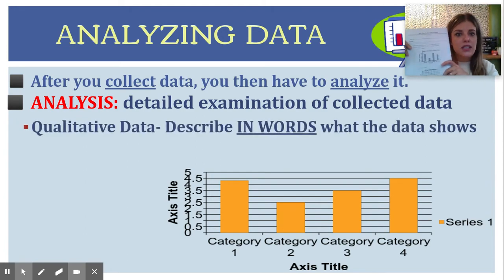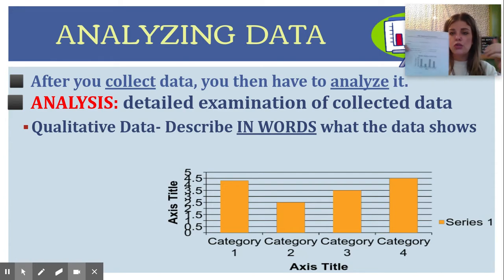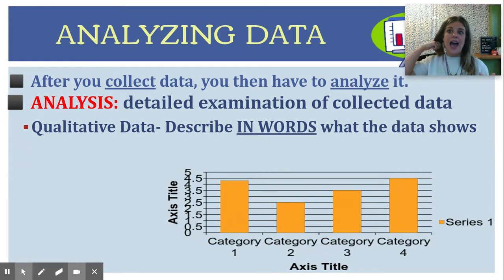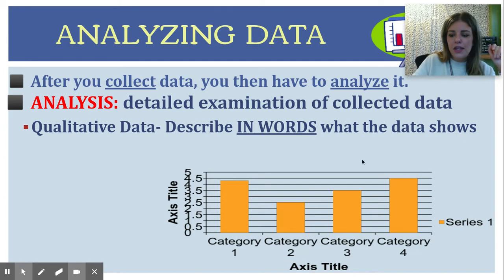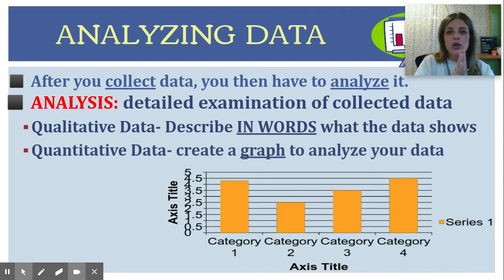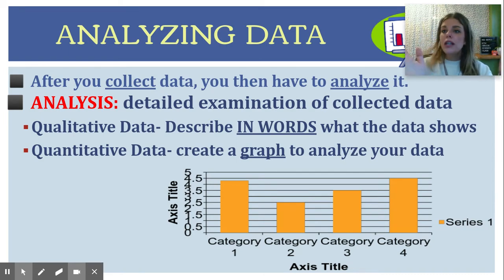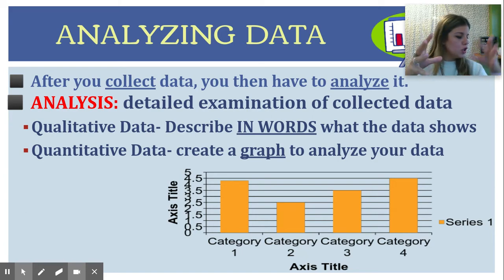Qualitative data is where you describe in words what the data shows. So you would say the data is showing me that the number of plants in the area is increasing as the weather gets warmer, or something like that. And then for quantitative data, you create a graph to analyze your data. If you collected quantitative data, you would want to graph that information.